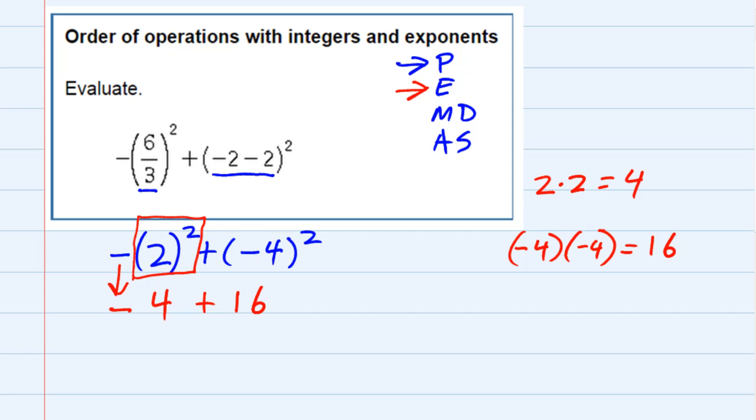And now there is no multiplication and division. So we're going to do addition and subtraction, because that's the last thing that we have left, negative 4 plus 16. Our rules for addition of integers say that when the signs are different, we're supposed to subtract and keep the sign of the larger, which is positive. So our solution here is a positive 12.